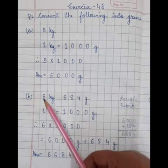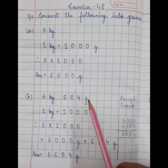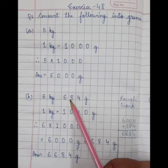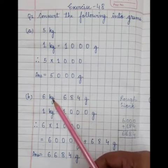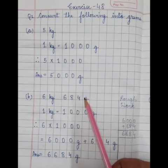Now, B part: 6 kg, 684 gram. As you can see, this number is already in gram. So first we will change 6 kg into gram, then we will add this number.